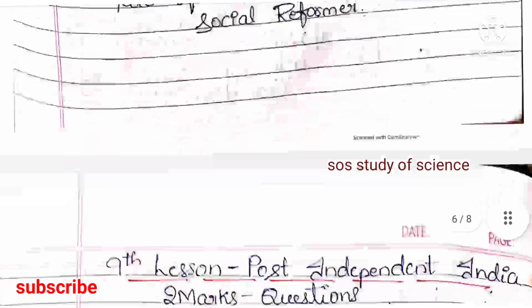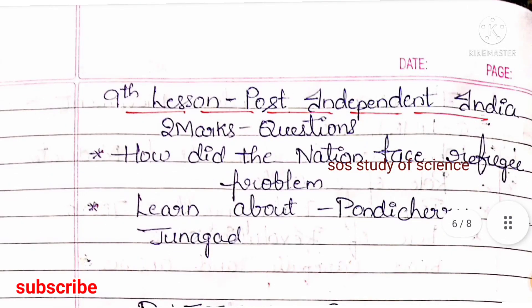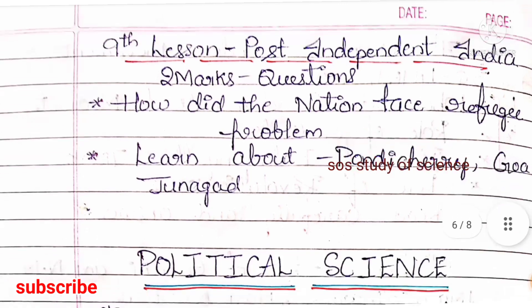Lesson 9 is Post-Independent India. Here usually 2-mark questions will be asked. Important concepts include: how did the nation face the refugee problem, and learn about Pondicherry, Goa, and Junagadh. Don't forget to learn these concepts. That is all about History.